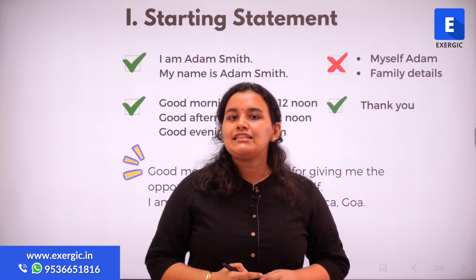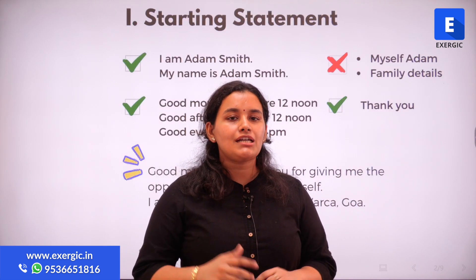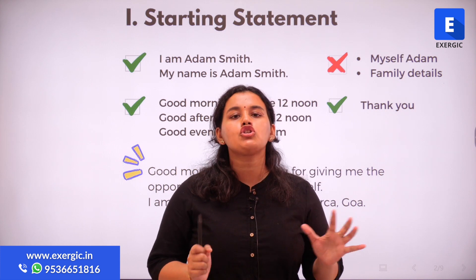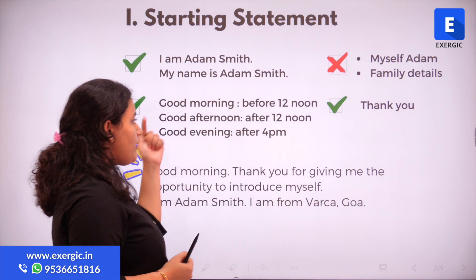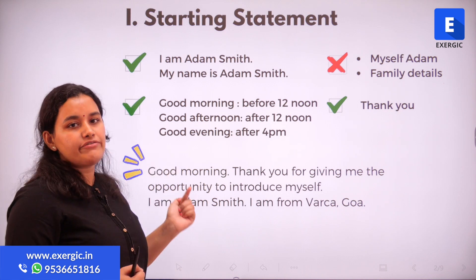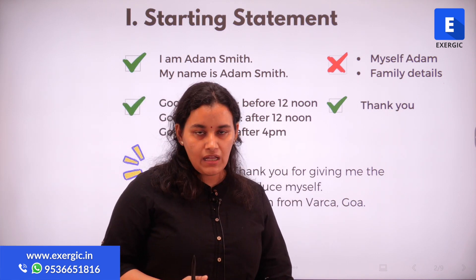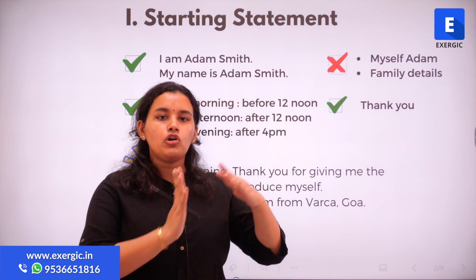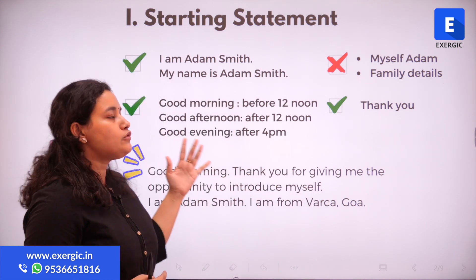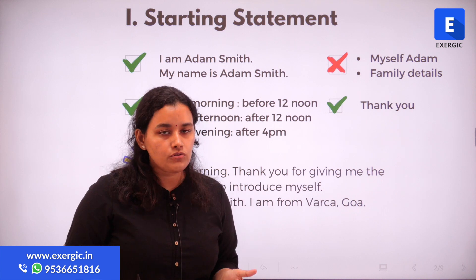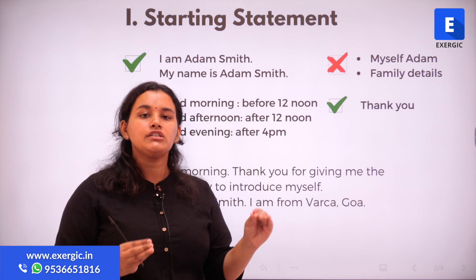Now let's look at the starting statement — what should it have and what should it not have? It should have a good morning, good afternoon, or good evening depending upon the time of the day. Anytime before 12 noon is good morning; from 12 noon to 4:30 is good afternoon, and after 4:30 is good evening.